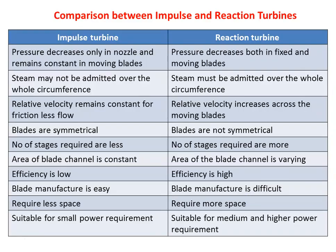Comparing impulse and reaction turbines: for the impulse turbine, pressure decreases only in the nozzle and remains constant in the moving blade; but in the reaction turbine, pressure decreases both in the fixed blade and the moving blade. In the impulse turbine, steam may not be admitted over the whole circumference because a jet of steam is produced by a nozzle. In the reaction turbine, steam must be admitted over the whole circumference. For frictionless flow in the impulse turbine, relative velocity remains constant: vr1 = vr2 (when k = 1); whereas in the reaction turbine, relative velocity increases across the moving blade, so vr2 is always greater than vr1.